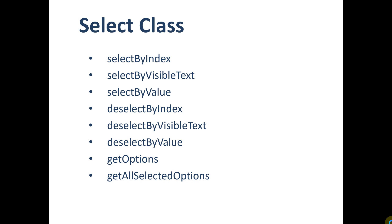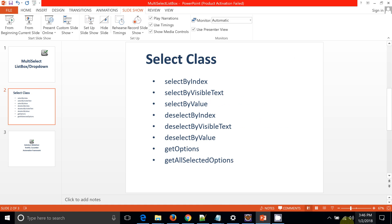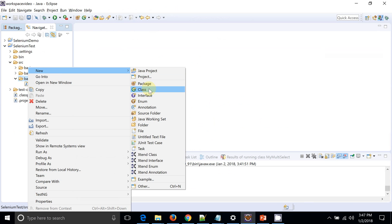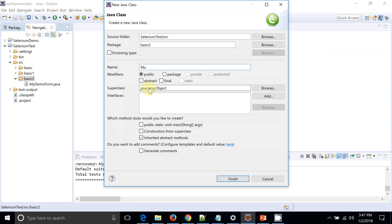There are also methods provided by the Select class: getOptions and getAllSelectedOptions. You may need these methods not only to perform certain operations but also to verify if a particular option is present inside the list box, and to verify whether the options you selected are properly selected on the UI.